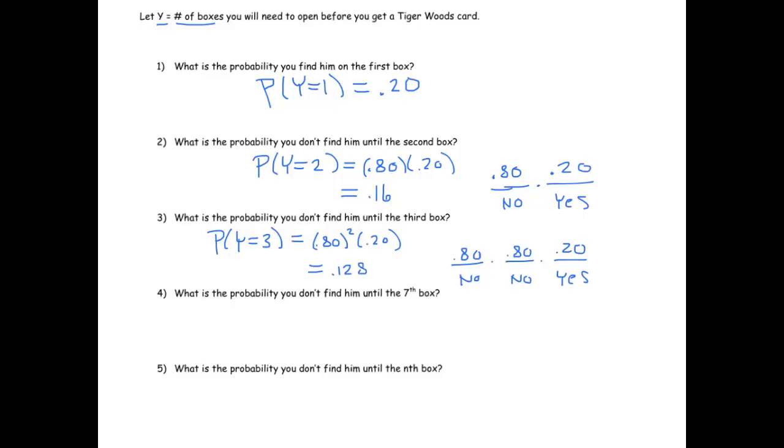You can probably see the pattern, but let's just do one more. What's the probability you don't find them until the seventh box? Well, that's the probability that our first Tiger Woods card is going to happen in the seventh box. And just for consistency, that has to happen by getting no Tiger Woods boxes on the first six, so no Tiger Woods on each of those. The first six have to not yield the Tiger Woods card, and then the last one has to. So this would be 0.8 to the sixth power times 0.2. And that ends up yielding a probability of 0.052.